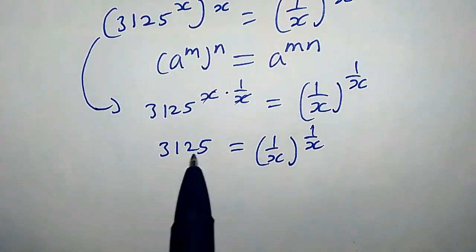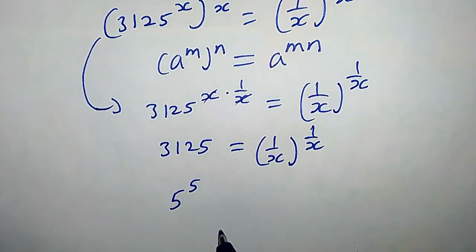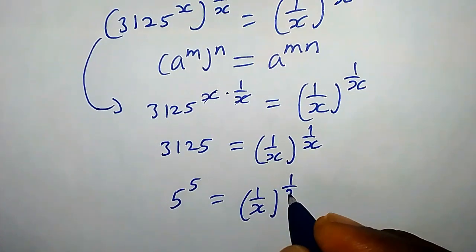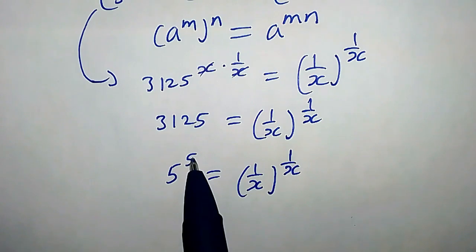Since the base is the same thing as the power, likewise on the right hand side, this implies that 5 equals 1 over x.